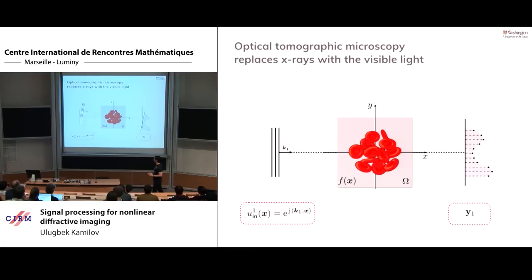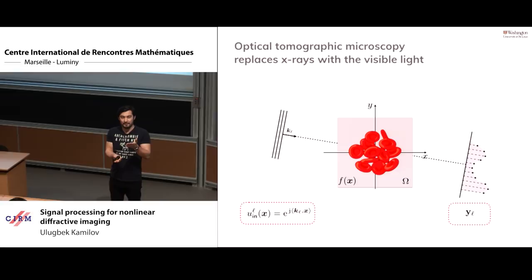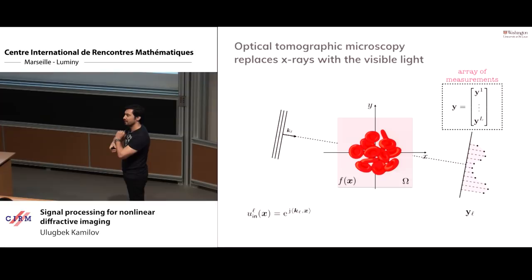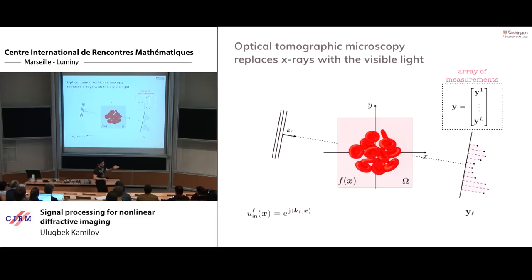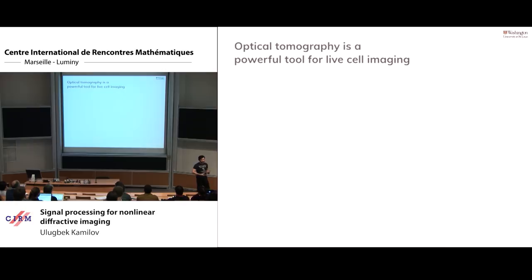One measurement is not enough, so like in tomography, we change the angle and scan from different angles, collecting capital L measurements total stored on computer. If you collected amplitude and phase, you'll have 2L images on your hard drive — half from amplitude, half from phase.